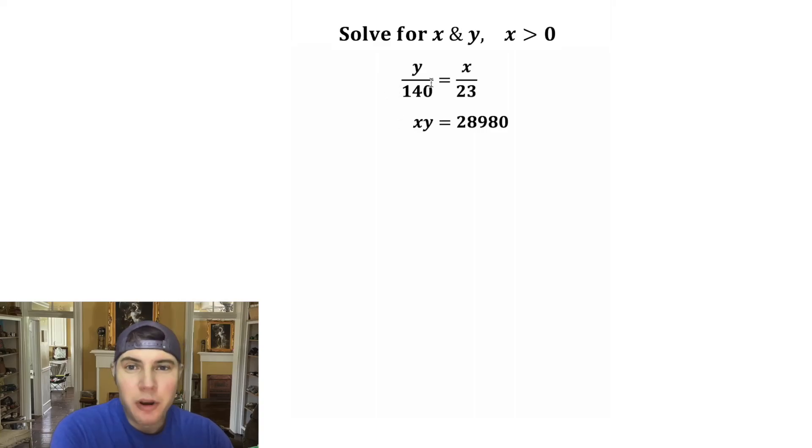Hey guys, here's a fun system of equations. We have y over 140 equals x over 23, and x times y equals 28,980. And we want to solve for x and y.